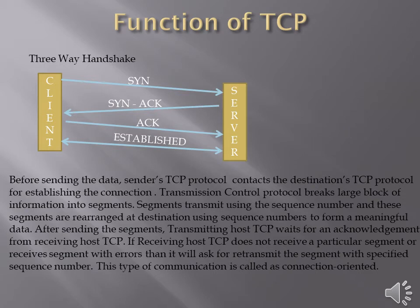Function of TCP: Before sending data, the sender's TCP protocol contacts the destination's TCP protocol to establish the connection. TCP breaks large blocks of information into segments. These segments are transmitted using sequence numbers and are rearranged at the destination using those sequence numbers to form meaningful data.